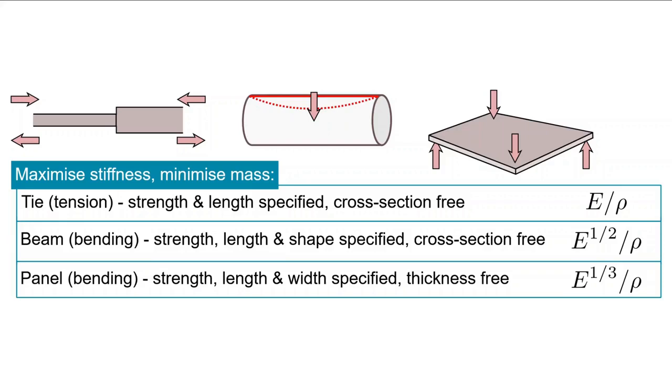Relating these back to the original general form of the performance index, P1 here is the modulus of elasticity, P2 is the density, and alpha ranges between 1 for a tie through to 1 half for a beam and 1 third for a panel, on the basis, again, of strength being defined.